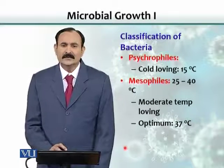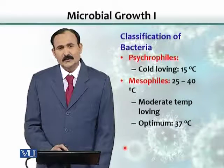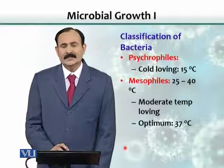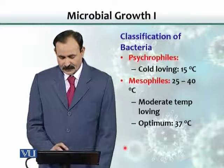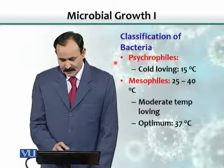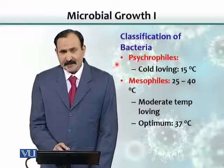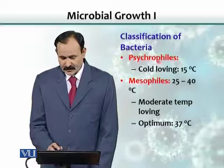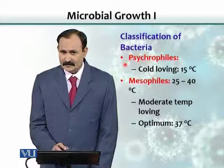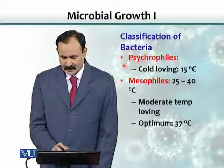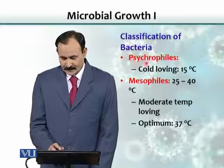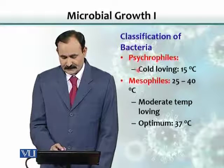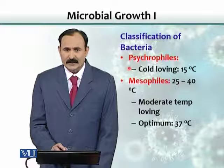Bacteria can be divided or grouped based on their temperature requirements for growth. Those that love cold environments to grow are called psychrophiles or psychrophilic bacteria. Psychro means cold, and phile or philic means to love, so they basically love cold temperatures.